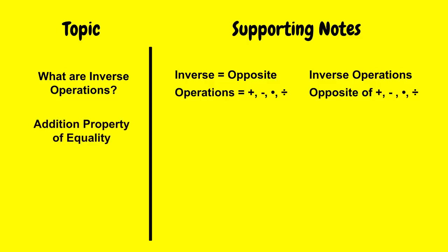The addition property of equality says if you have two things equal to each other, then by adding the same thing to both sides, it's still going to be equal to each other. In other words, let's say I have 2 equal to 2. That equation is true.